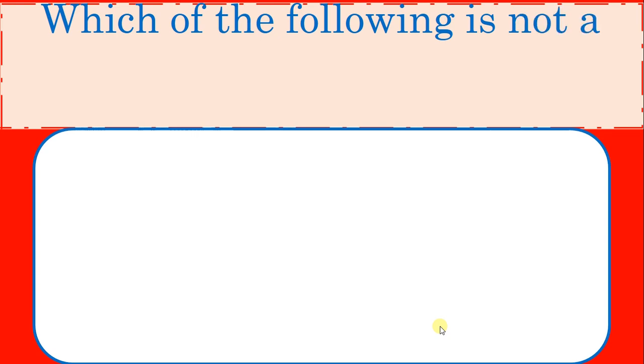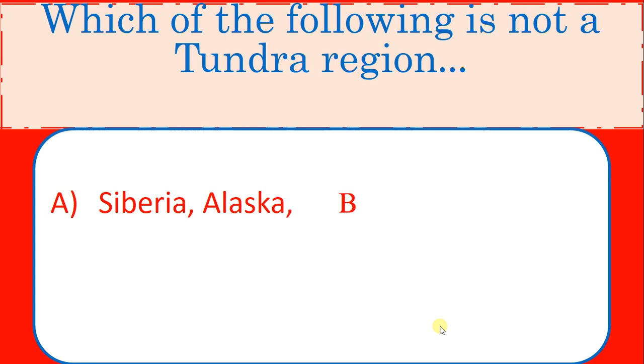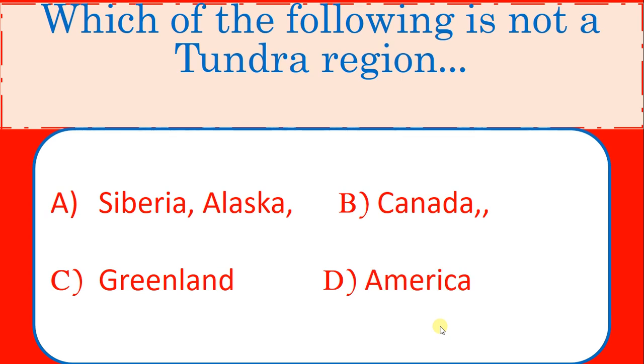Which of the following is not a Tundra region? Options: Siberia, Alaska, Canada, Greenland, America. Correct answer: America.